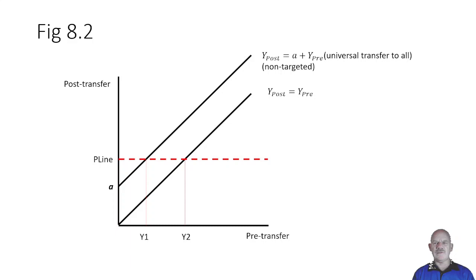So that means a universal transfer to all persons. Universal means everybody gets it. So you need to understand and remember the difference between a universal transfer and a targeted transfer. Universal means it's not targeted. Targeted means only some people will get the transfer.